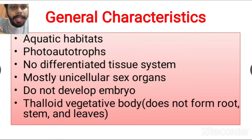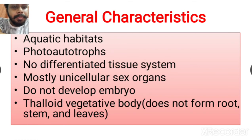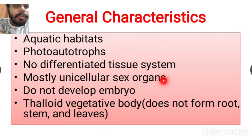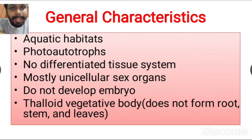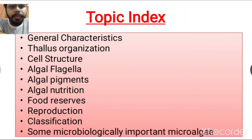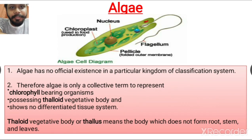They do not show any differentiated tissue system. Mostly, they have unicellular sex organs and do not develop any embryo. They carry a thalloid vegetative body, which does not form any root, stem, or leaves like plants. These are the most general characteristics of algae.